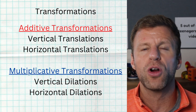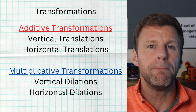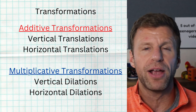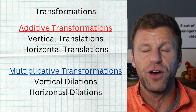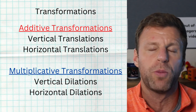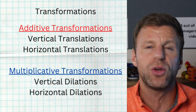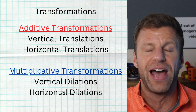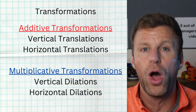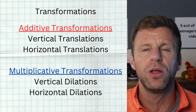When it comes to horizontal dilations, you're not multiplying your x values by your b value inside of the function. Yes, you're multiplying by b, but what you're actually doing to your x values is multiplying by a factor of one over b, or the reciprocal. Hopefully not too bad there.